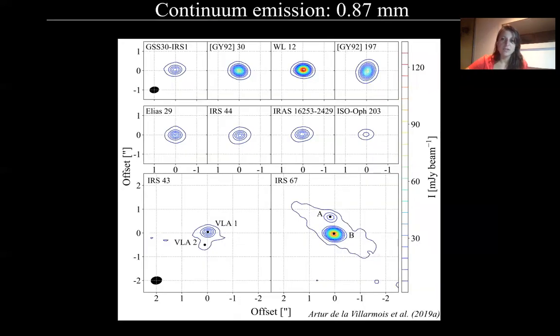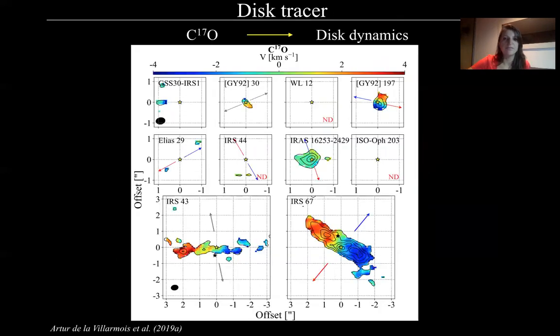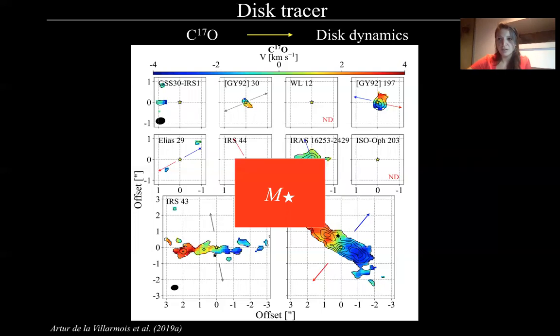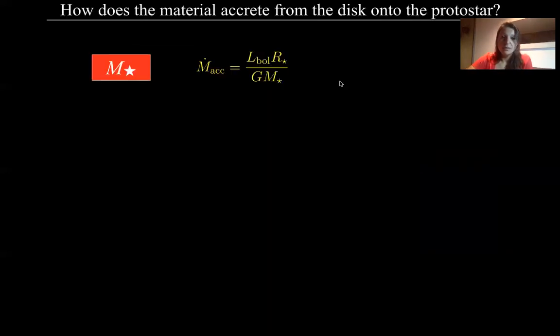And this is the continuum emission in Band 7. We see emission in all the sources and also these are binaries. For the disk tracers, this is the particular case of ISO-Oph 17. This was very important because we studied the disk dynamics and by fitting position-velocity diagrams we can estimate the mass of the protostar.